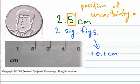Again, in this case, our position of uncertainty is in the tenths of a centimeter position, and so that communicates that any measurement made with this particular ruler is going to be essentially plus or minus a tenth of a centimeter, or one millimeter.